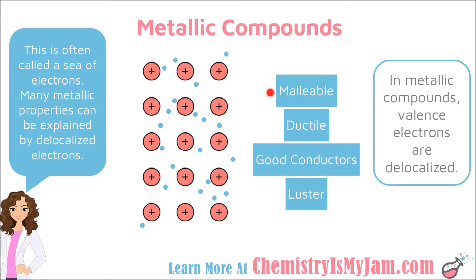Metals are malleable, which means that you can bend them. They are ductile, which means that you can draw them into wires. If there were strong covalent or ionic bonds between these atoms, you would not be able to bend them or draw them into wires. This sea of electrons allows motion between the atoms.